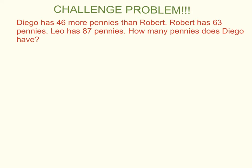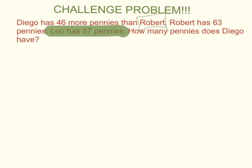On your paper you should have started a bar model, but before you did that, you needed to notice something very tricky about this particular word problem — this sentence right here: Leo has 87 pennies. I noticed that in my first and second sentences, Leo is not mentioned. Diego has 46 more pennies than Robert, so Robert is who I should be caring about. This entire part — Leo has 87 pennies — was put there to trick you. Do not be tricked by extra information. Pause the video, erase anything about Leo, and try solving the problem again knowing that the Leo part was a trap.